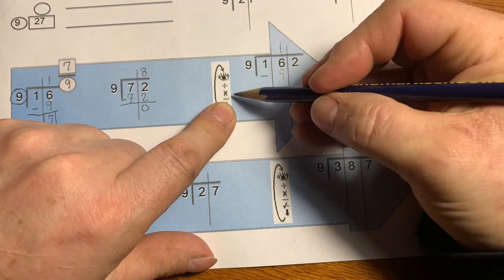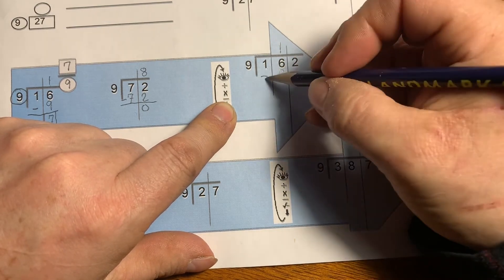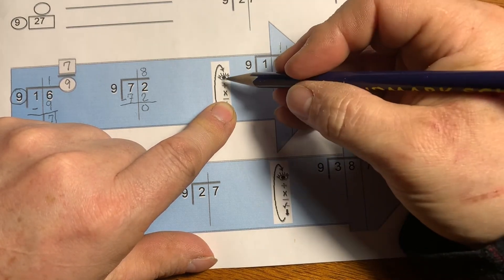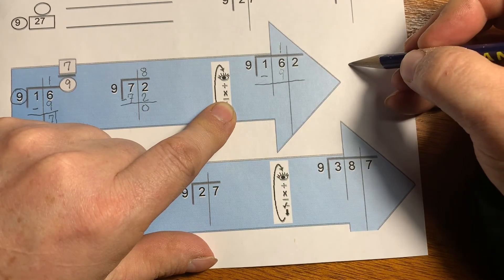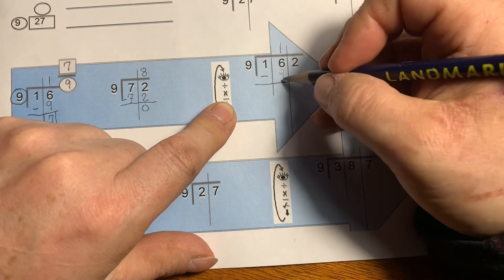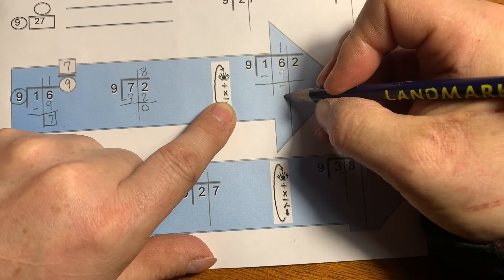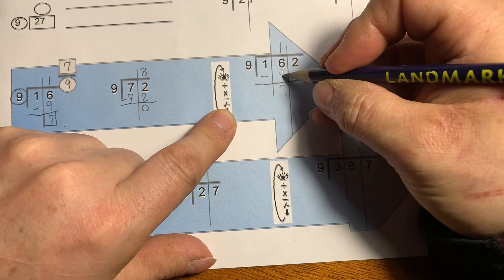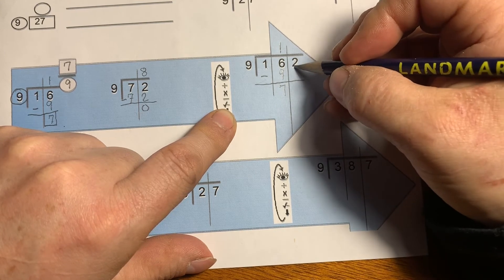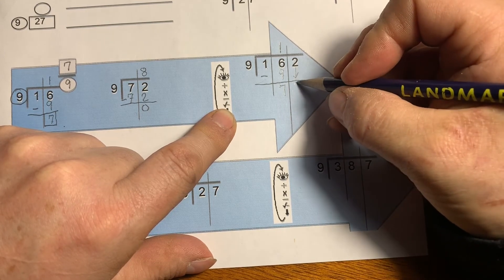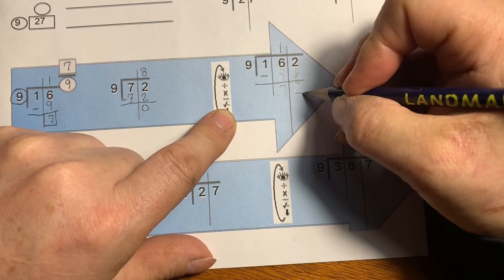Now we're going to move to subtract. Notice I track with my left finger as I'm doing this. If you're left-handed, it's handy to have this over here. As I subtract, I get 7. Let's check: 7 plus 9 is 16. Looks good. I'm poised to bring down this 2. I'm going to keep my pencil right where it is after bringing down, because this is where I'm going to compare.